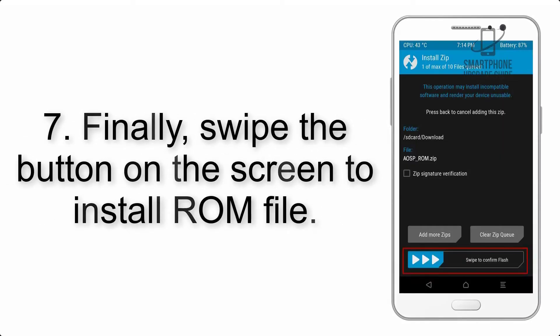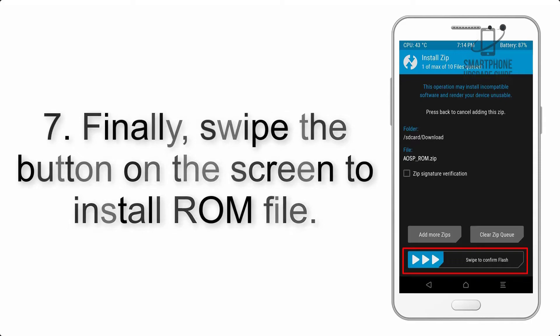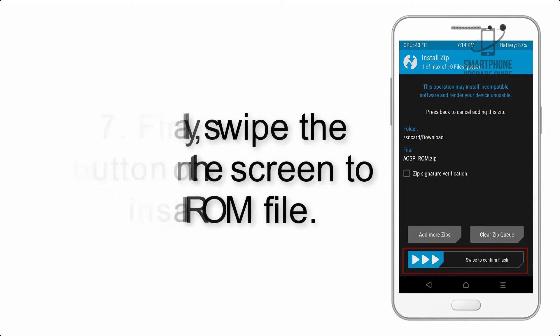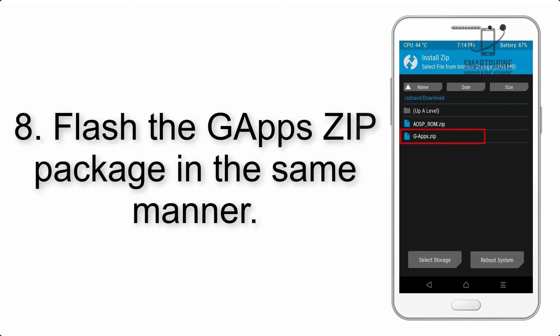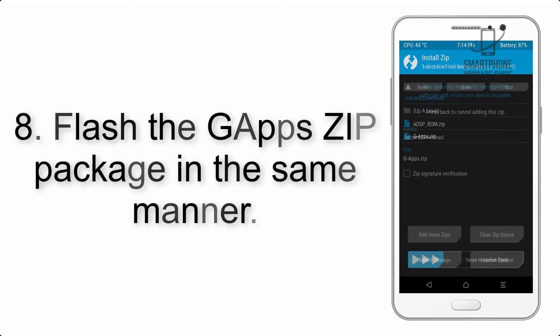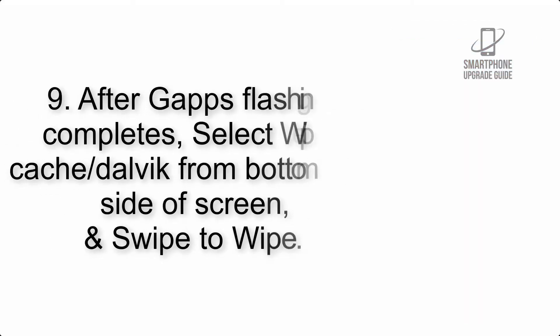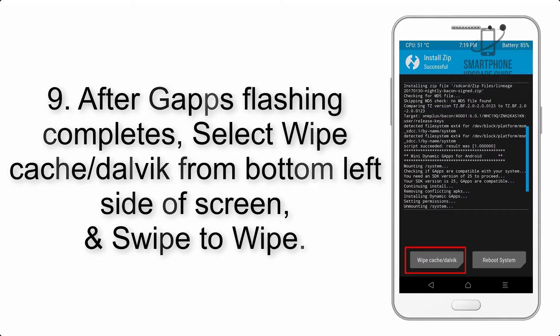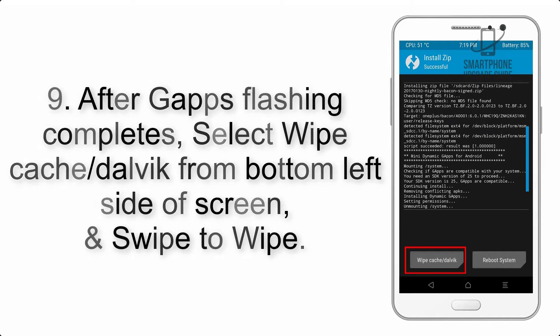Step 7: Swipe the button on the screen to install the ROM. Step 8: Flash the GApps zip package in the same manner. Step 9: After GApps flashing completes, select Wipe Cache/Dalvik on the bottom left side of the screen and swipe to wipe.